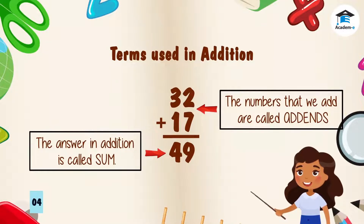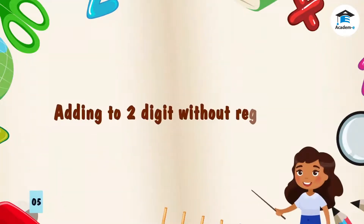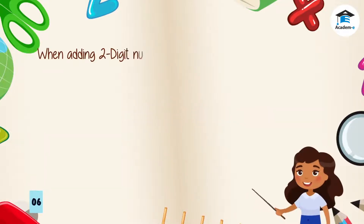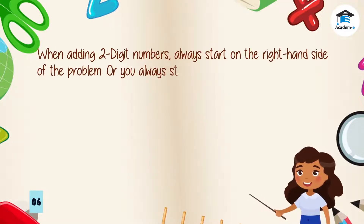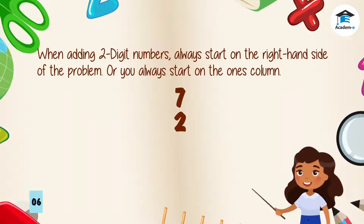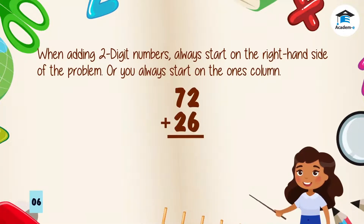Now let's move on to adding two-digit numbers without regrouping. When adding two-digit numbers, always start on the right-hand side — that is, always start on the ones column. For example, 72 plus 26: we need to start adding the digits from the right side, in the ones column.